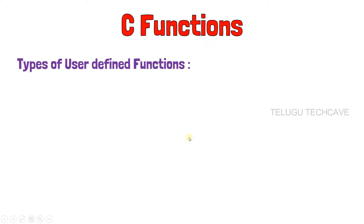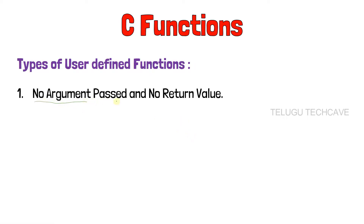Next, types of user-defined functions. There are four types. First: no arguments passed and no return value. Second: no arguments passed but has a return value.